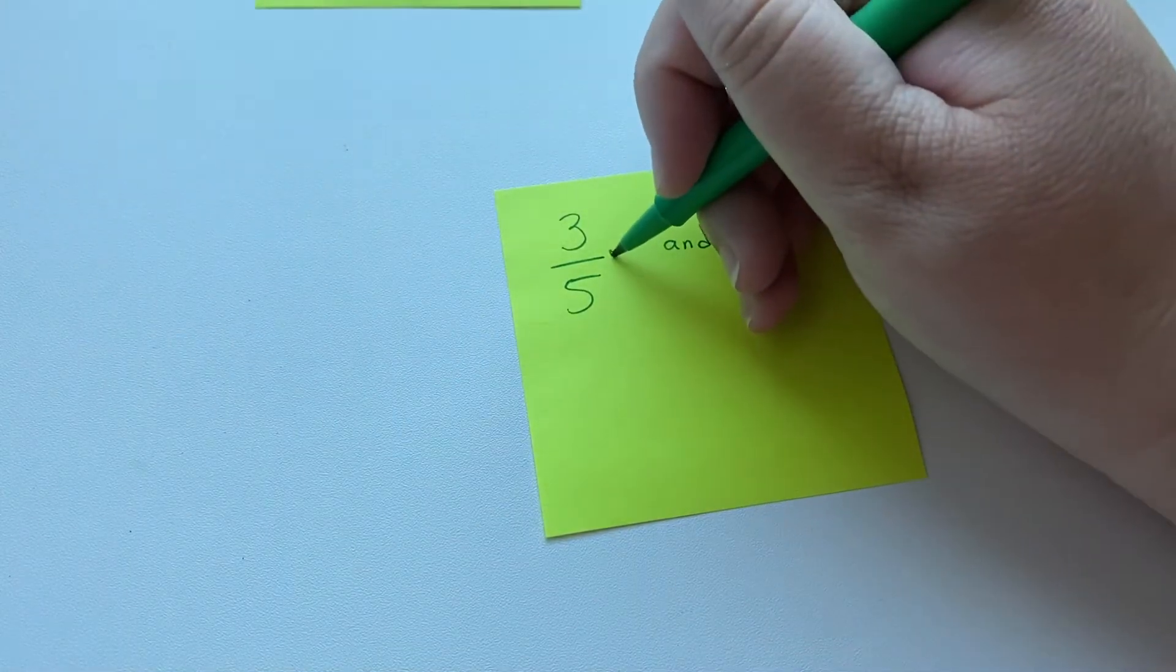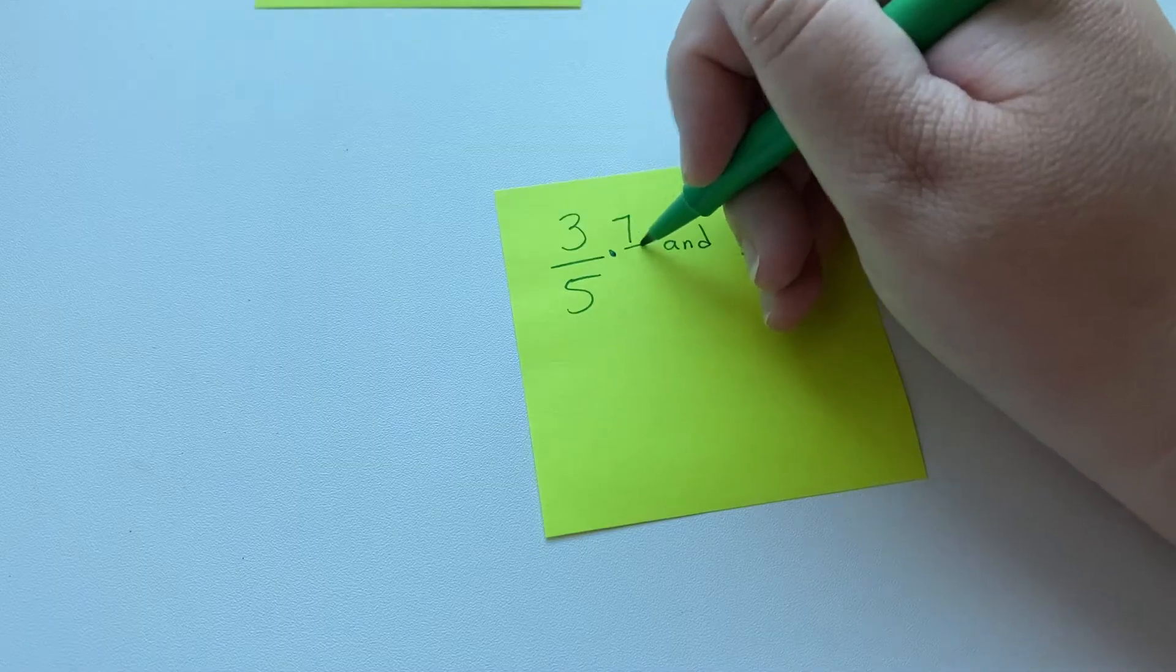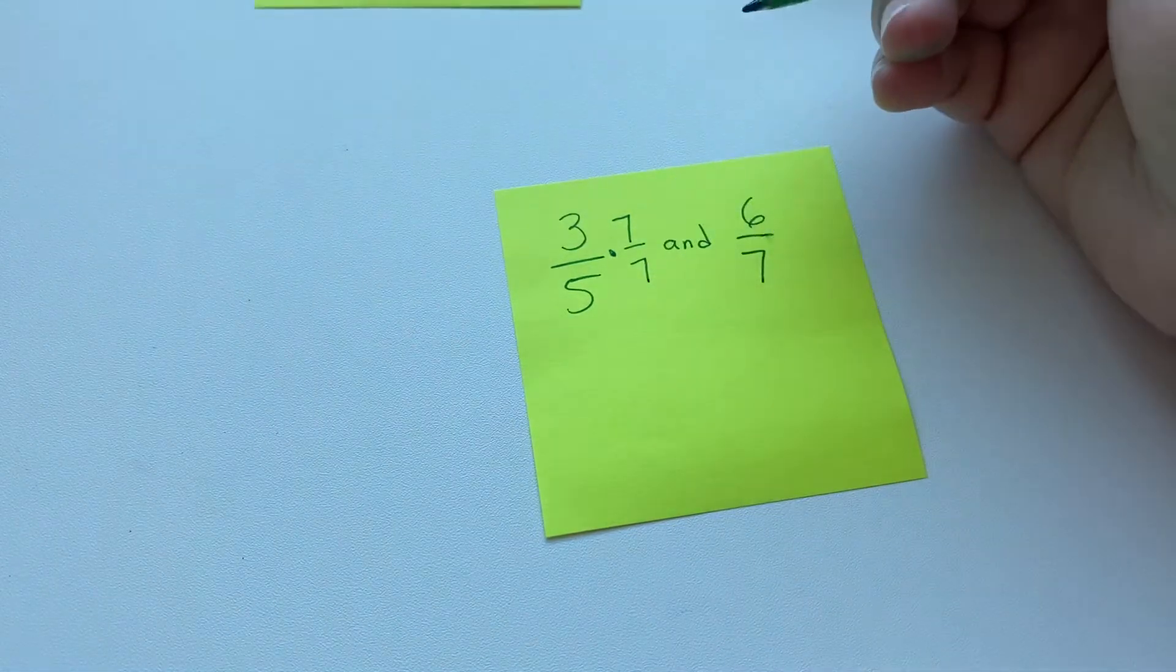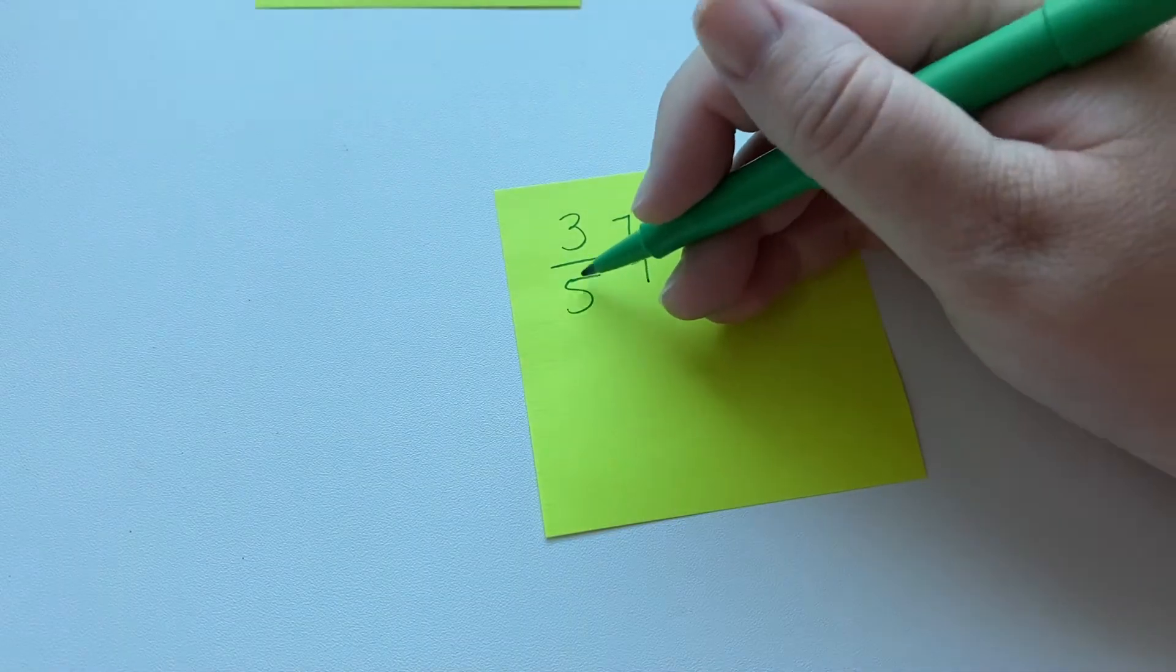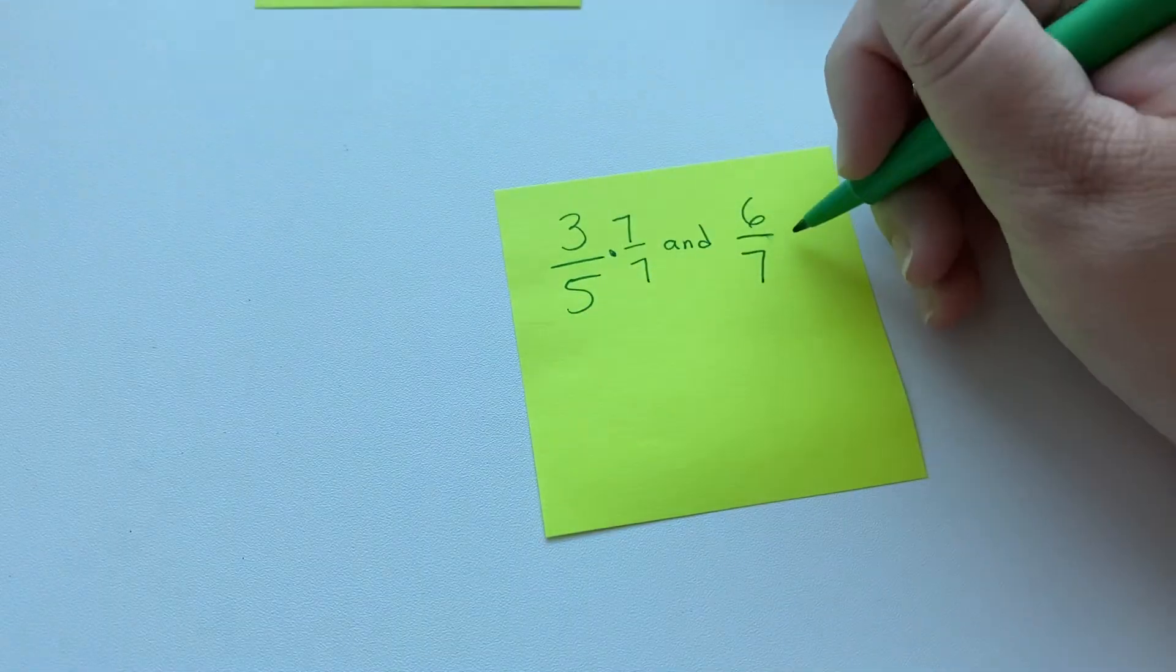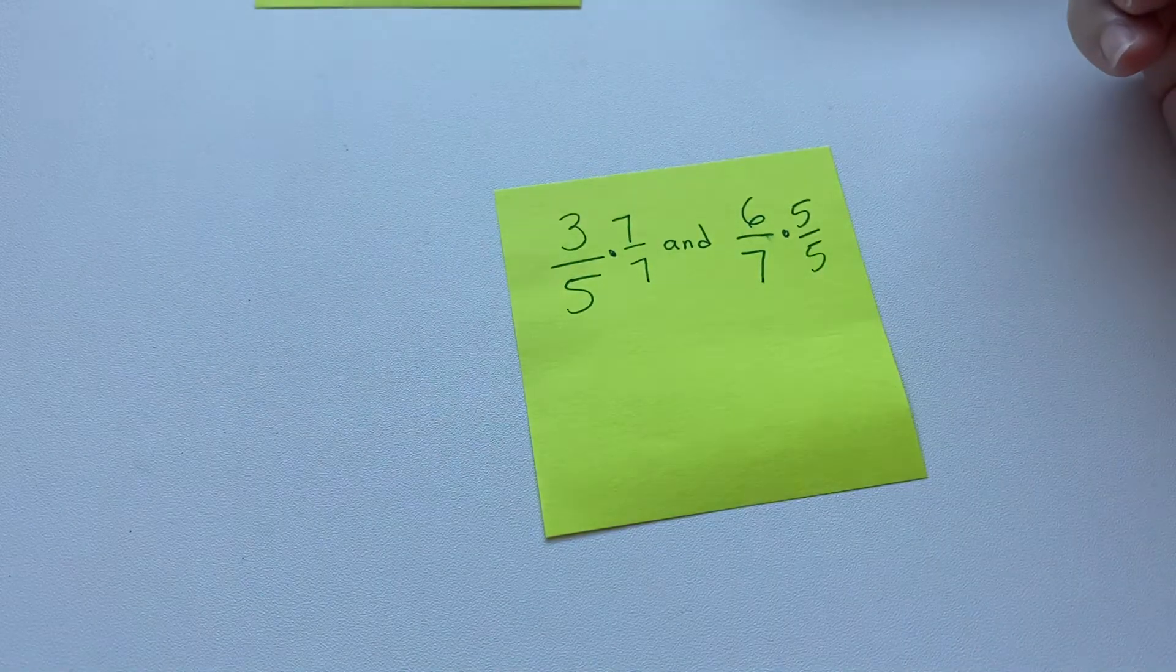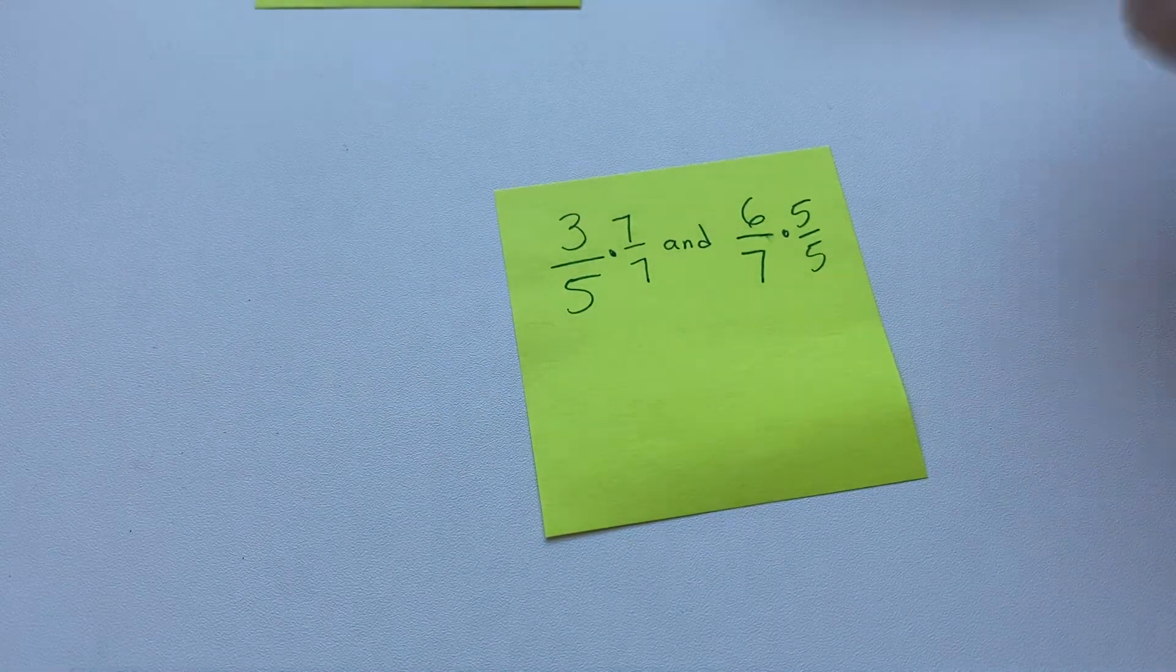But we can multiply a fraction by one and keep it proportional. Seven over seven is one. And then we're going to use the denominator over here, which is five. And we're going to make a form of one with it. Five over five.